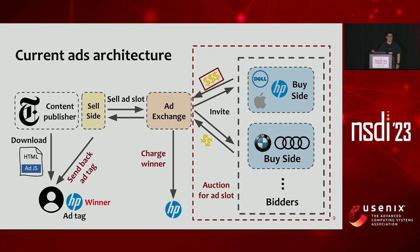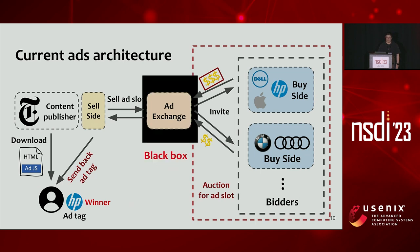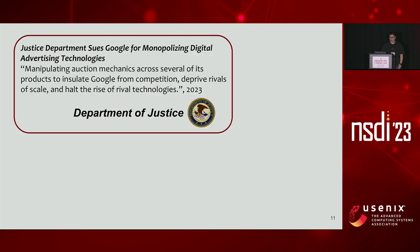The ad exchange collects all bids, runs an auction to find the winner, and sends back the ad tag to the browser so the ad is displayed on your screen. Afterwards, the ad exchange charges the winner based on the specific auction mechanism used. The current exchange system runs as a black box, making it hard for outsiders to understand what is happening inside.